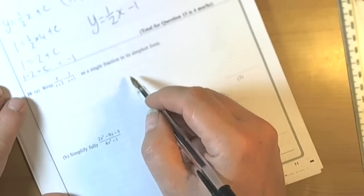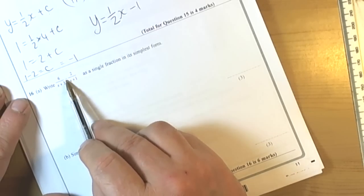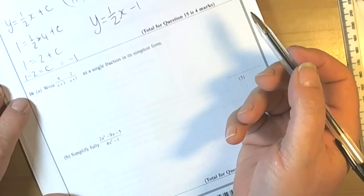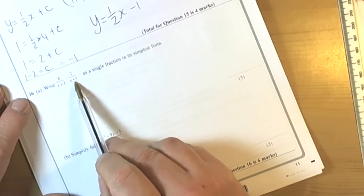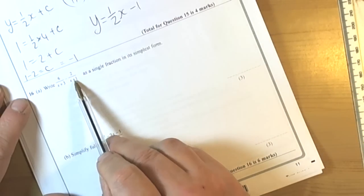The first part of this question wants you to write as a single fraction two different fractions that have been taken away from each other. So we need a common denominator, and because we've got x plus 3 and x plus 1, it's not going to be a quick division.